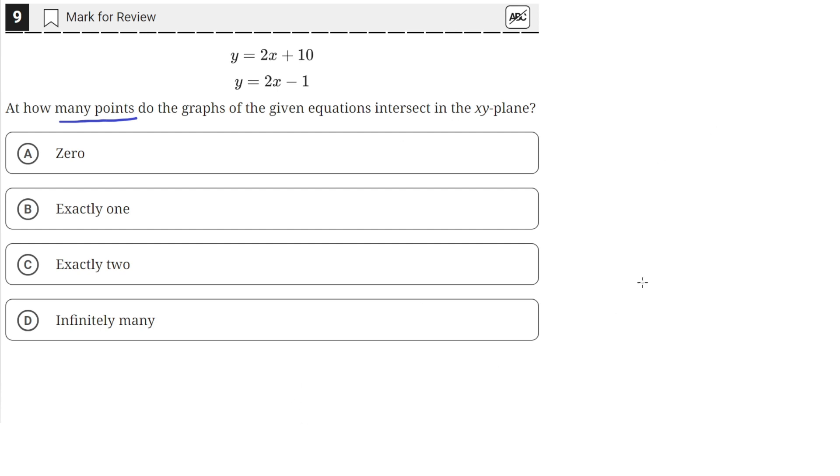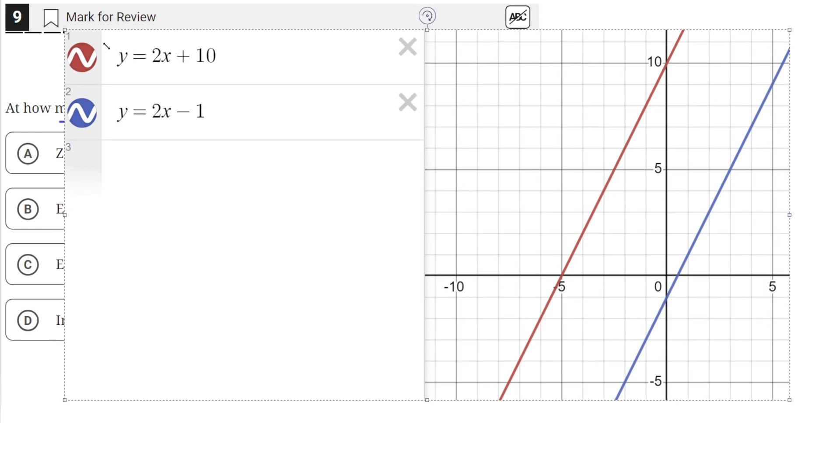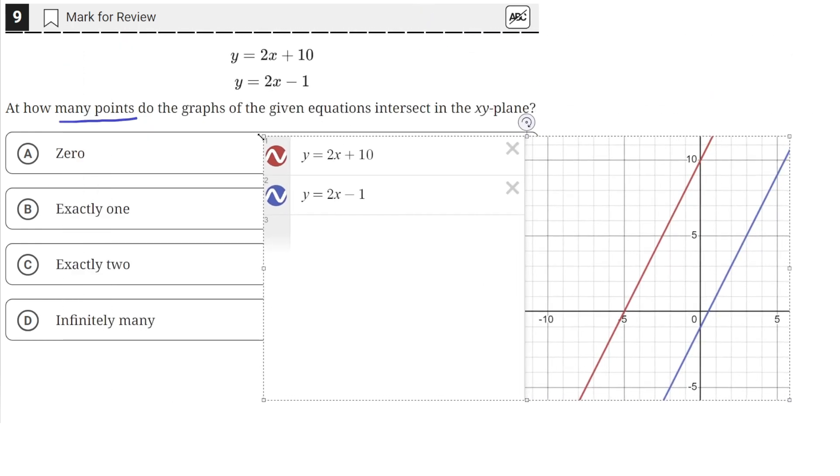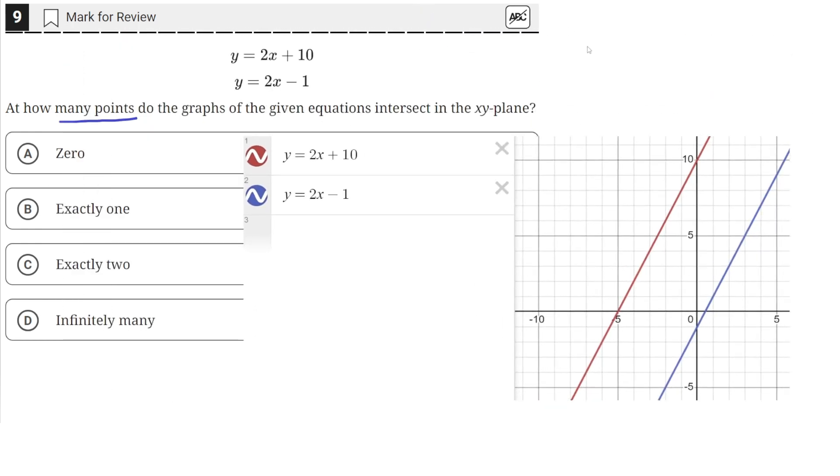I've graphed these two lines in Desmos, which you can do on the testing application. So this is y equals 2x plus 10, and y equals 2x minus 1. The red line is 2x plus 10, and the blue one is 2x minus 1.